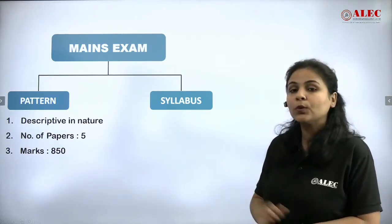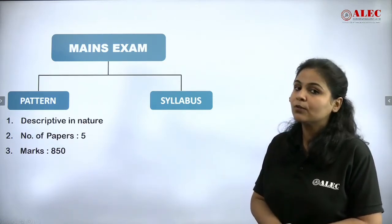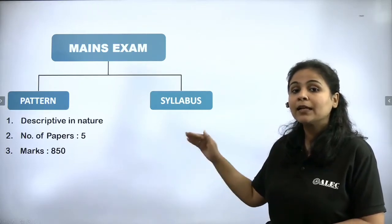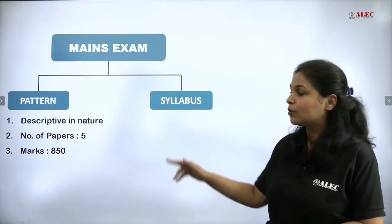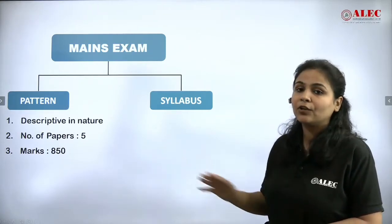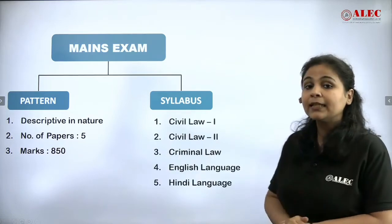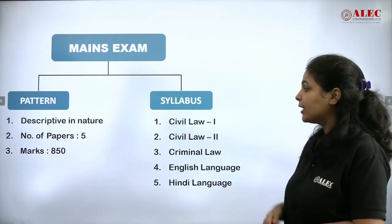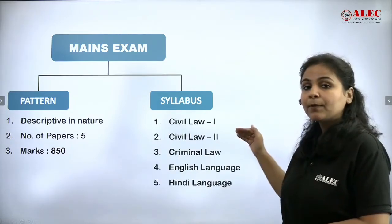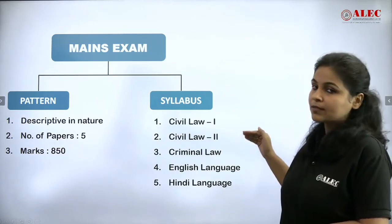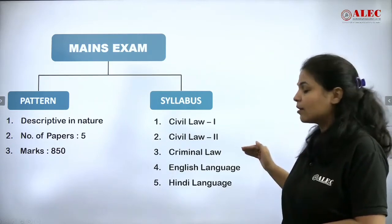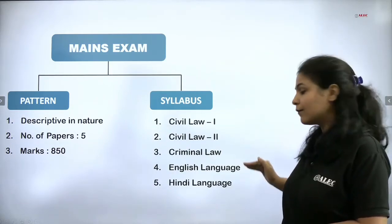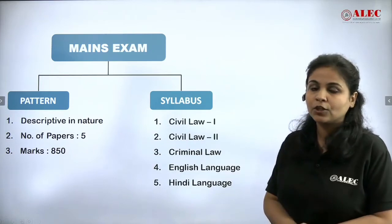The total number of papers will be 5, and the total marks will be 850. Now let's look at how the papers are divided. The first paper will be Civil Law 1, the second will be Civil Law 2, the third will be Criminal Law, the fourth will be English Language, and the last paper will be Hindi Language.